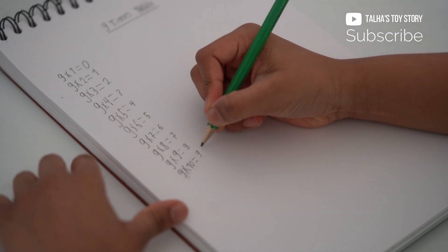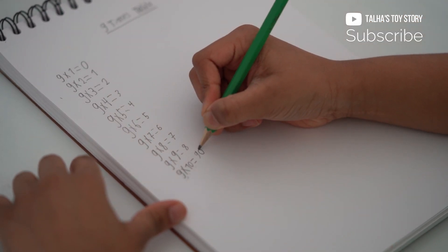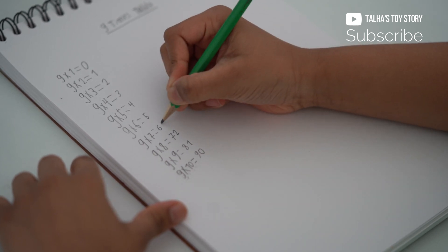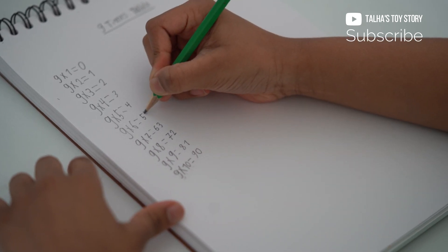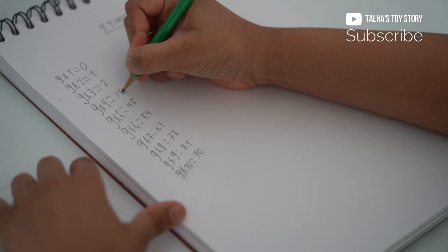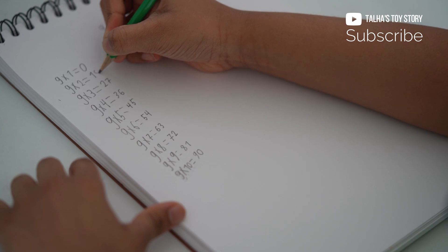If I want to show you the trick in the 9 to 10 times table, I will start from the 10 times table. I will show you the trick in the 2 times table.